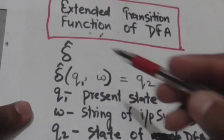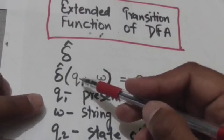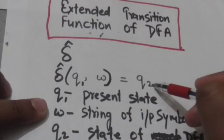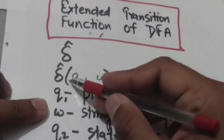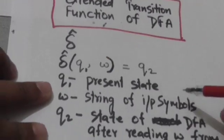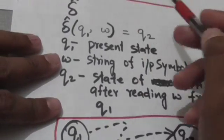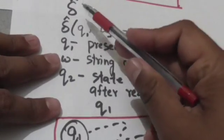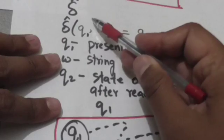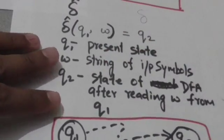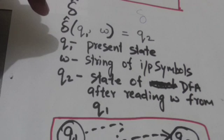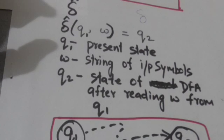The output of extended transition function for state q1 and a string of input symbols w is q2. It means when the machine is in state q1 and it reads a string of input symbols w, it will jump to state q2. This transition function is different from normal transition function — normal transition function gives the transition for a single input symbol, while extended transition function gives the transition for a string of one or more input symbols.